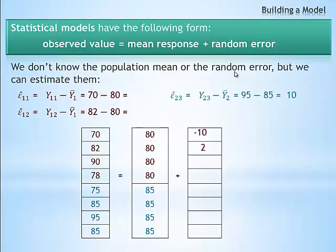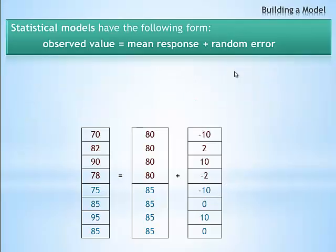The third residual from the second group is y23, in this case 95, the third observation from the second group, minus the mean of the second group, and gives us a value of 10. After calculating the rest of the residual values, we have three completed columns.